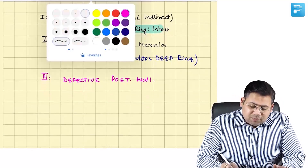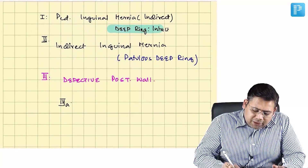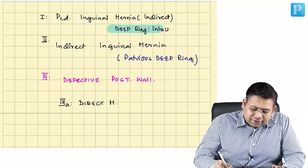What is the most common of them? 3A is a direct hernia.